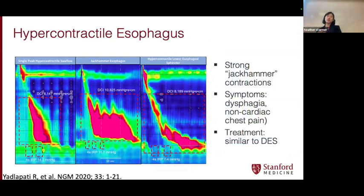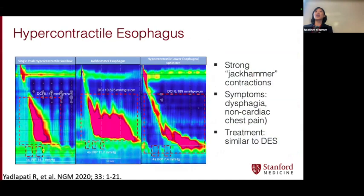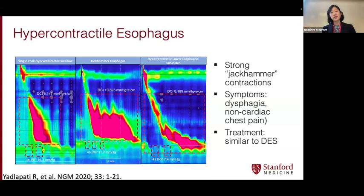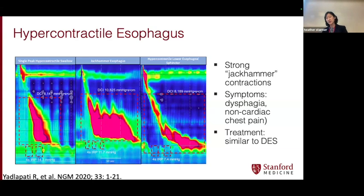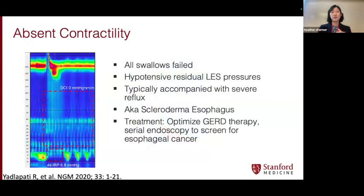A clinically similar condition is something called hypercontractile esophagus, also known as jackhammer. This is where the esophageal contractions are very strong and patients will go to the ER thinking they're having a heart attack — that's how much it hurts. It happens with swallowing. We try to treat it in the same way we treat spasm — we try to relax that sphincter. Sometimes we do Botox injections, but outcomes are not that great.